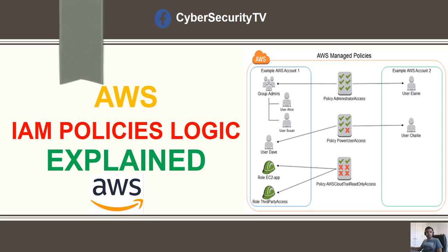Welcome back to Cyber Security TV. I've been planning to discuss AWS for a while — I started that playlist but never got a chance to come back with new videos. This week I decided to cover a very important topic: how IAM policy evaluation happens in the back end. We'll discuss the logic, examples, and step-by-step how the evaluation process works.